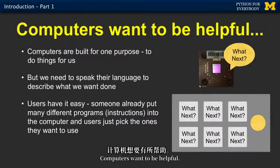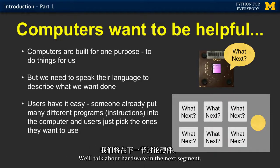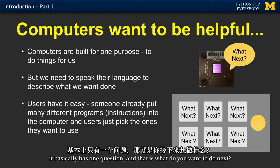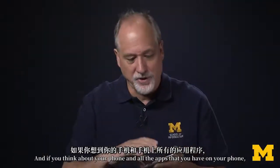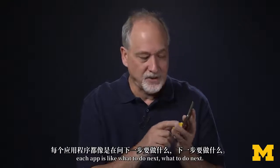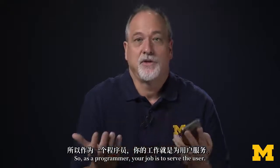Computers want to be helpful. They are programmed, they're designed — the hardware is designed. We'll talk about hardware in the next segment. But it's designed and wired, and when you apply electricity to it, it basically has one question: what do you want to do next? If you think about your phone and all the apps you have, each app is like what to do next. So as a programmer, your job is to serve the user.